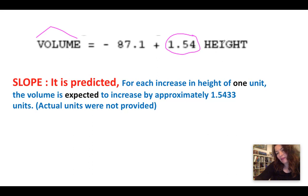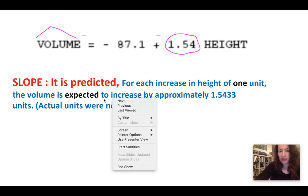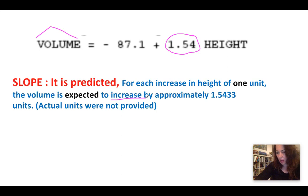As the height increases by one unit, it is predicted that volume will increase. Now I say increase because the slope is positive. Since the slope is positive, we say increase. If the slope here was negative, we would say decrease. So it will increase by approximately 1.5433 units. The units were not provided, so normally you want to mention the units if given (centimeters or whatever), but in this case they didn't mention the units.